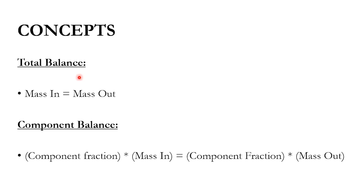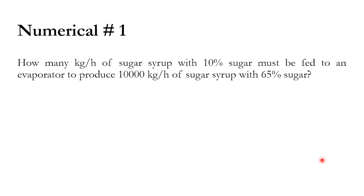The concept is that for a total balance, mass in should equal mass out. For a component balance, the component fraction associated with the mass in should equal the component fraction associated with the mass out. This is the law of conservation of mass applied here.